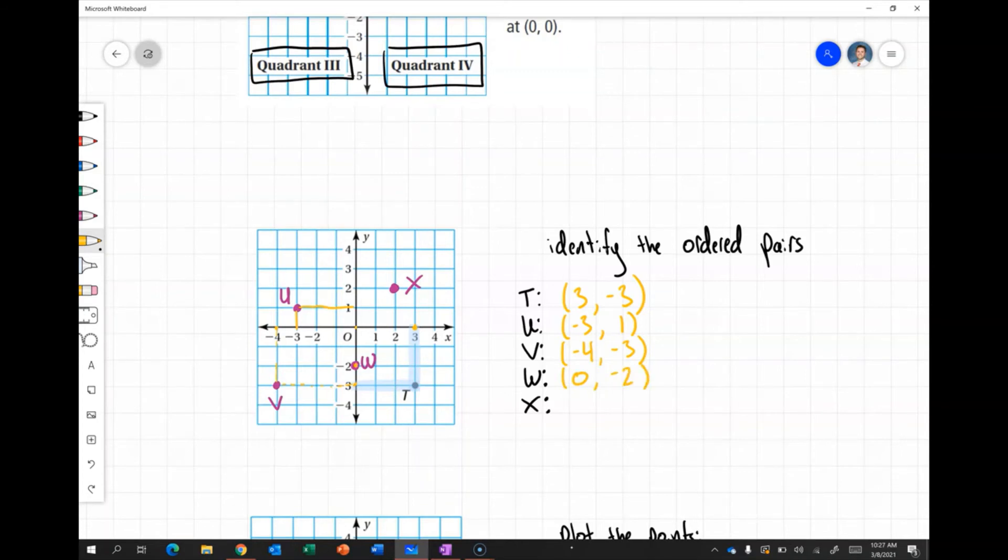And finally my point X is at 2 on the x-axis and 2 on the y-axis. So it's at 2, 2.